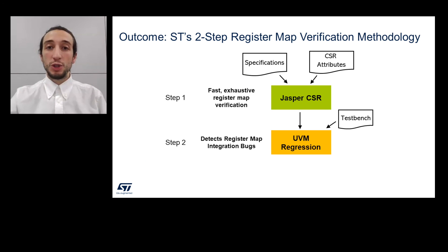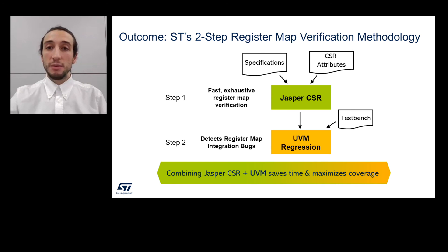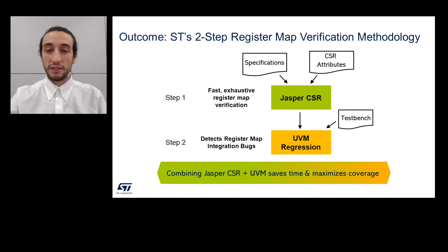Our conclusion was to modify our register map verification methodology to combine both Jasper CSR and UVM. In this context, we chose to run Jasper CSR first and then UVM. With this approach, we maximize our coverage, find more bugs, and get results faster. We have already successfully used our new methodology on more than one new design.